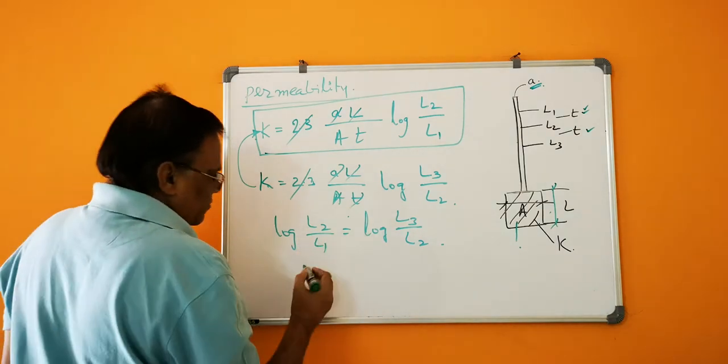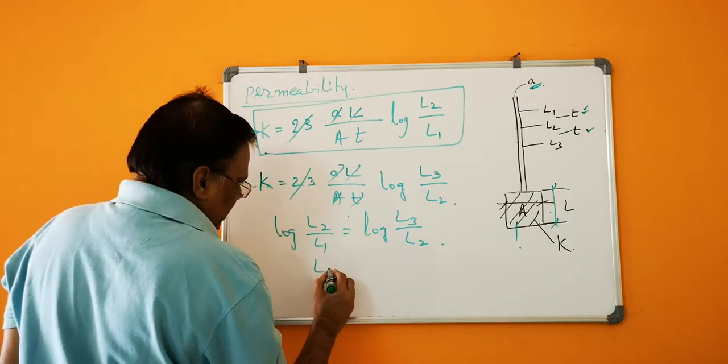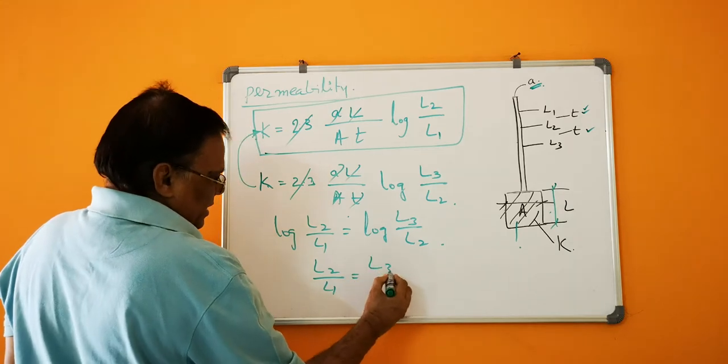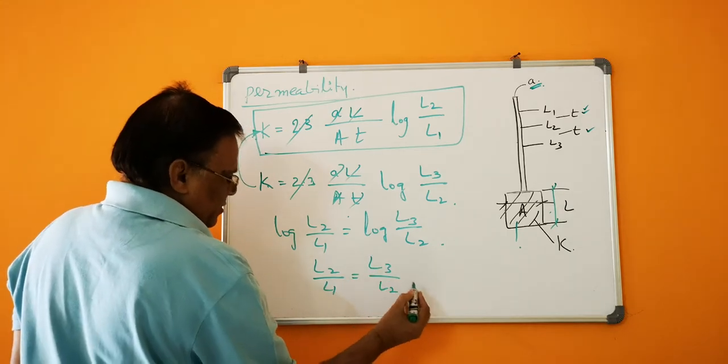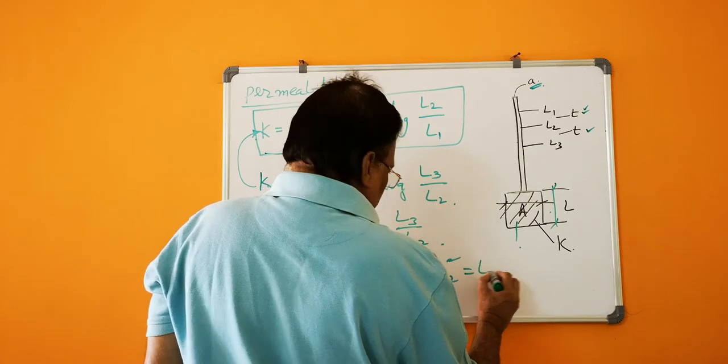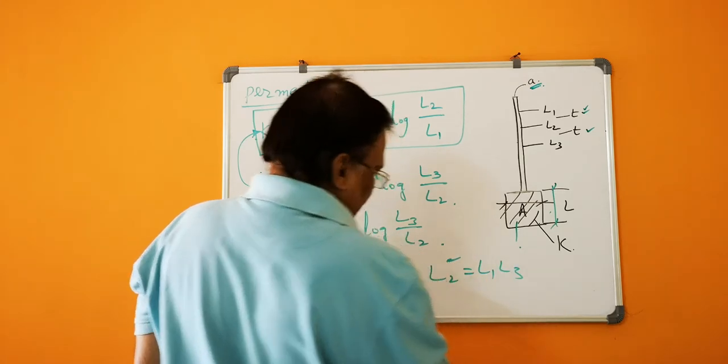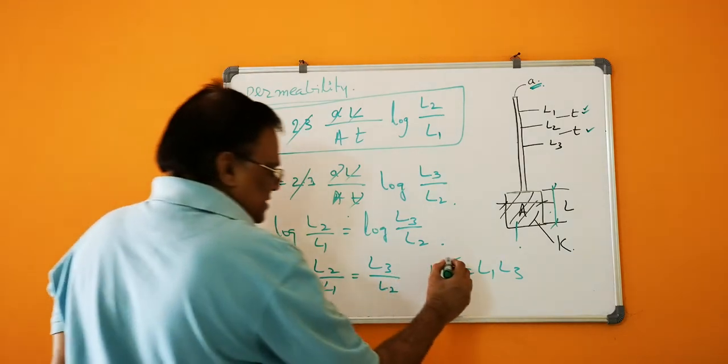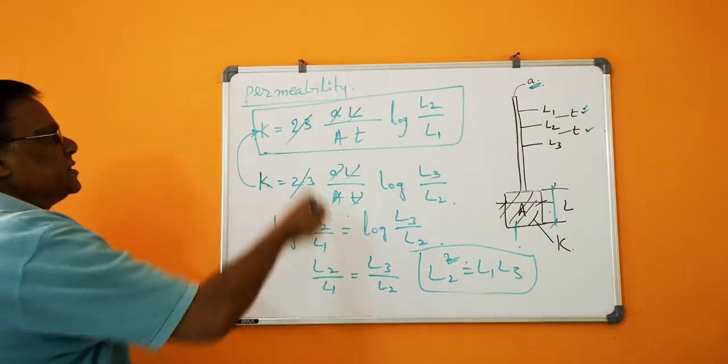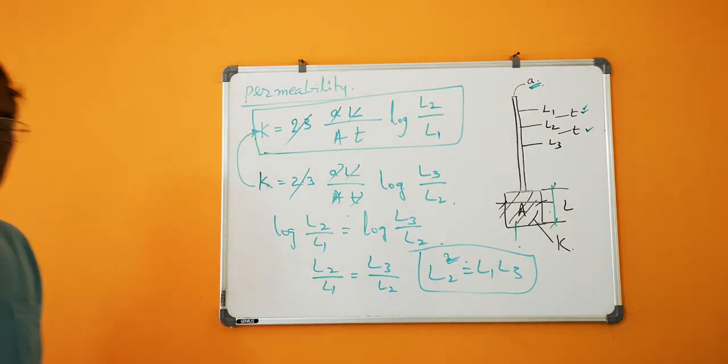If both sides log is there, then L2 by L1 is equal to L3 by L2. So L2 square is equal to L1 multiplied by L3. This is the relationship which is drawn and it is given in the exam. This is a common GATE problem.